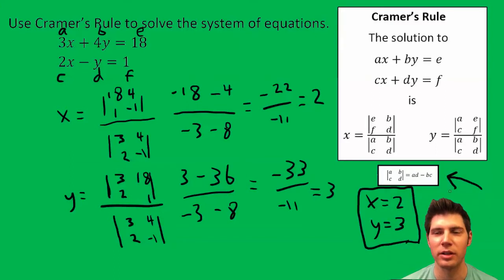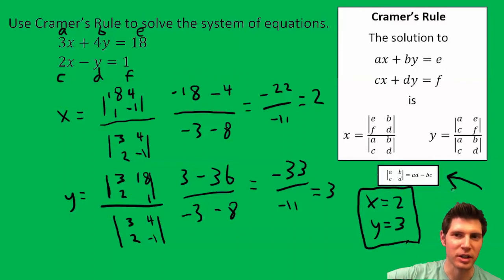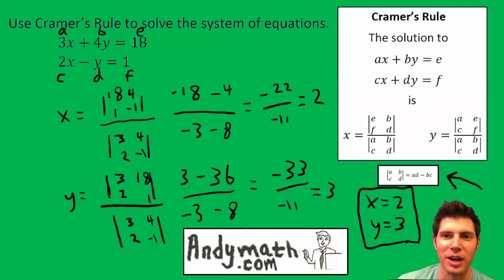Here's the note right there for the determinant of a 2 by 2 matrix. It's just the diagonal multiplied minus the other diagonal multiplied. So if this makes sense, please like and subscribe. Check out more videos at andymath.com. I'll talk to you guys soon. Bye.